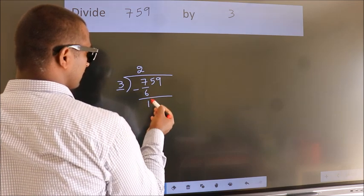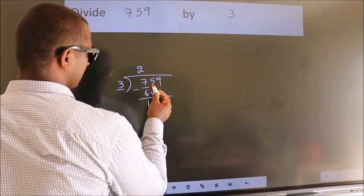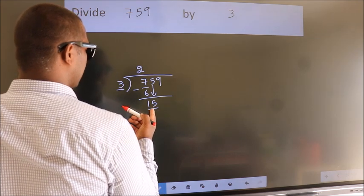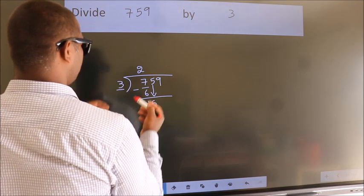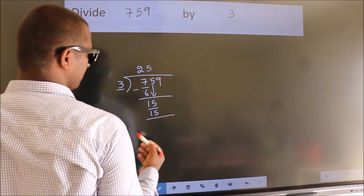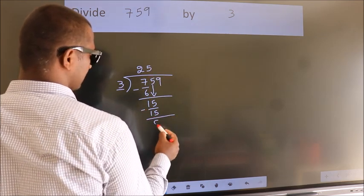After this, bring down the beside number. So 5 down. So 15. When do we get 15? In the 3 table, 3 times 5 is 15. Now we subtract. We get 0.